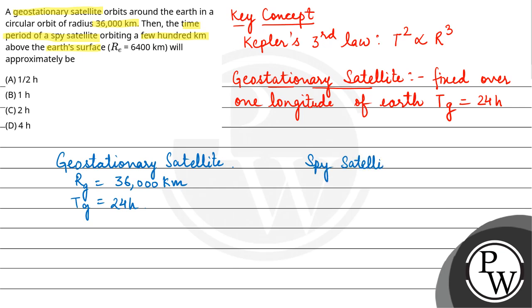The spy satellite orbit radius is approximately equal to the earth's radius, which is equal to 6,400 km.